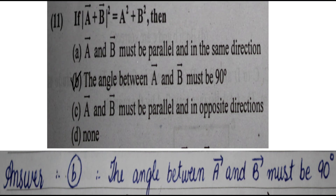Next question: if |a + b|² equals |a|² + |b|², then what must be true? This is a standard result: whenever this condition holds, the angle between the two vectors must be 90 degrees. So option B is the correct answer.